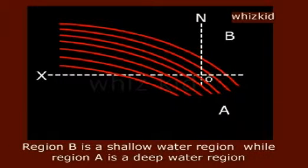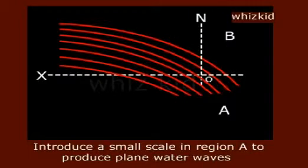Region B is a shallow water region while region A is a deep water region. Introduce a small scale in region A to produce plain water waves.